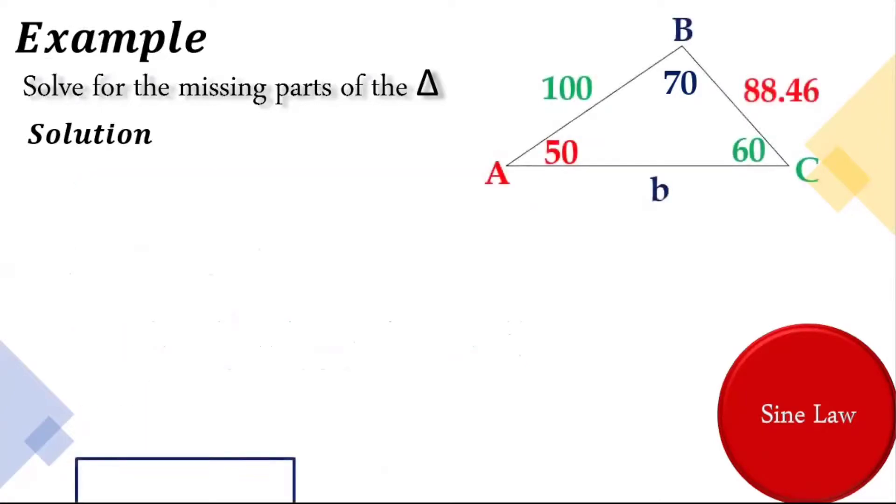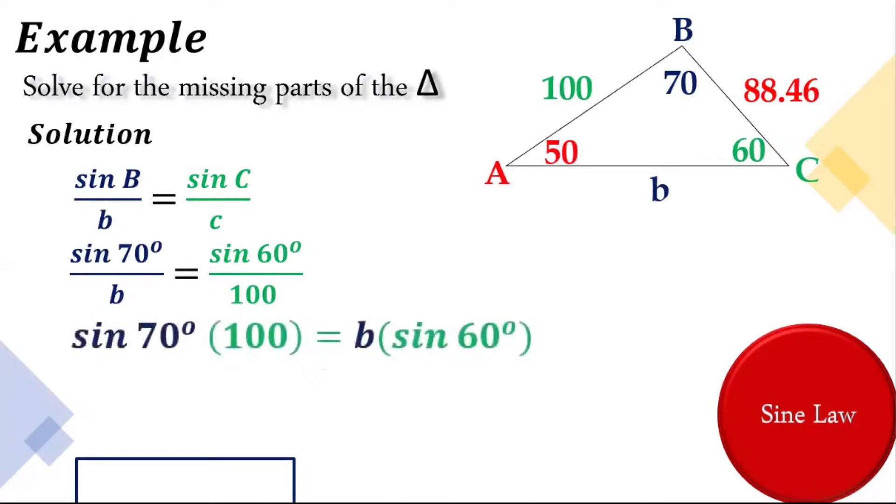Now let's find for side b. So we will be using sine B over b is equal to sine C over c. Same process. Substitute the value. Sine 70 degrees over b is equal to sine 60 degrees over 100. Cross multiplication and we will get this. Then divide both sides by sine 60 degrees.